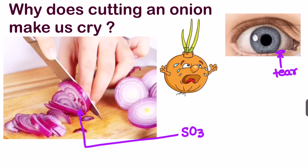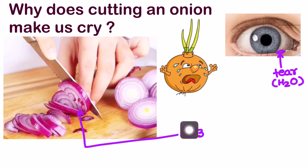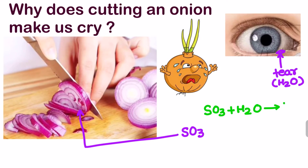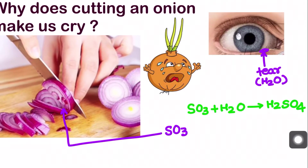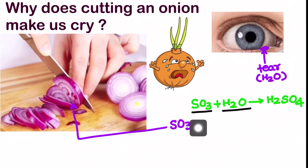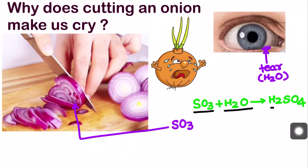The tear contains water, and when SO3 and H2O come in contact with each other, there will be a chemical reaction: SO3 and H2O react together to form a very strong acid — H2SO4. So we can see that SO3 and H2O are reacting together to form H2SO4.